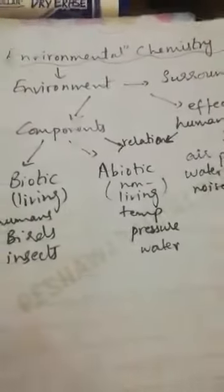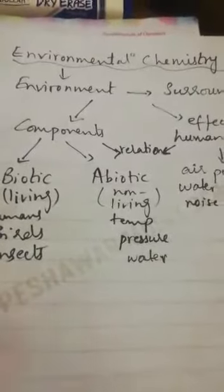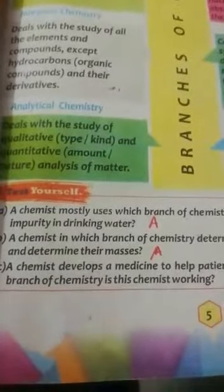Today we have completed the topic of branches of chemistry in detail. You must listen to the previous lecture as well as this lecture, and also consult your book for learning the definitions. Now if you look at your book on page 5, there is a small activity called 'Test Yourself.' These are simple questions to test your knowledge on the branches of chemistry. The first one is: a chemist mostly uses which branch of chemistry to determine the amount of an impurity in drinking water?